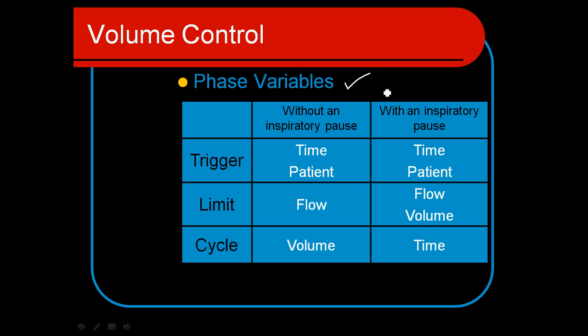When we talk about the phase variables, the trigger is by time for a mandatory breath and it's assisted when the patient triggers the ventilator, often with flow or pressure triggers. It's limited by flow. And when it hits whatever our tidal volume we had determined, it's volume cycled into exhalation. When we put on the inspiratory pause, these don't change, but we've added now a volume element that's being held during inspiration. So we have to include as a limit both the flow and the volume. The cycling now is going to be controlled by the Ti pause. Once that time has elapsed, we're going to cycle into exhalation.